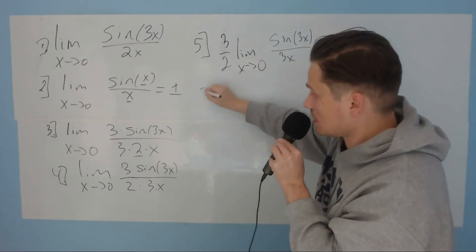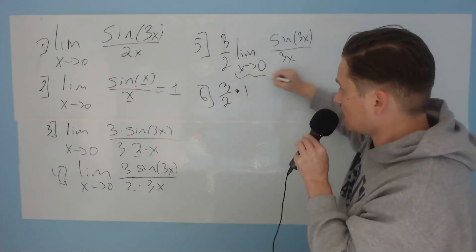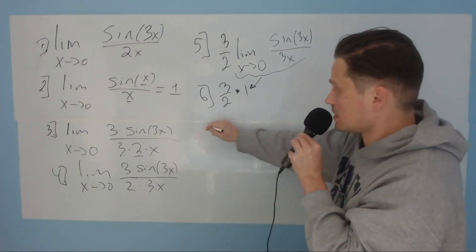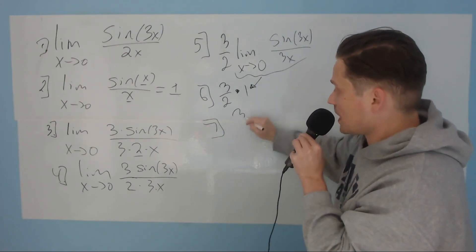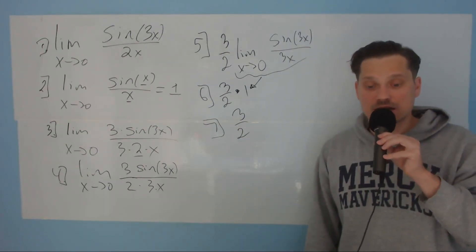So that means that I can write 3 halves times 1. This whole thing is just equal to 1. So lastly, that just gives us 3 halves as the value. And that is it. Thanks so much for watching. Leave a like. I'll check you out in another video.